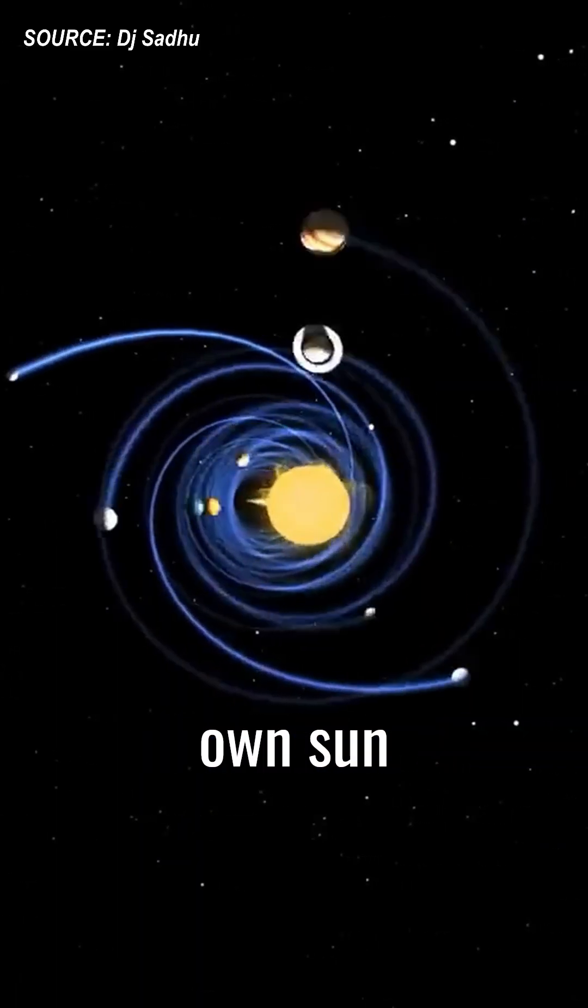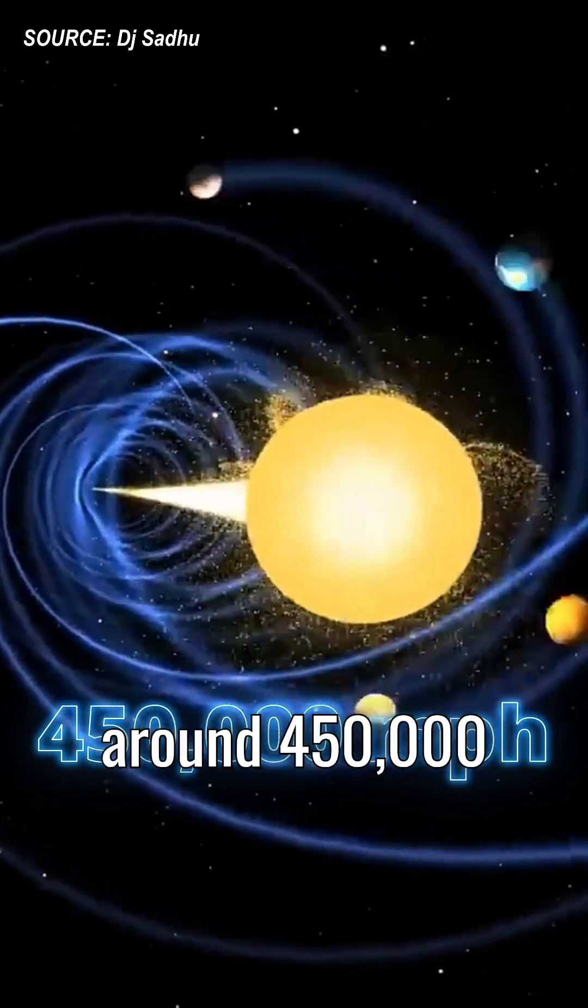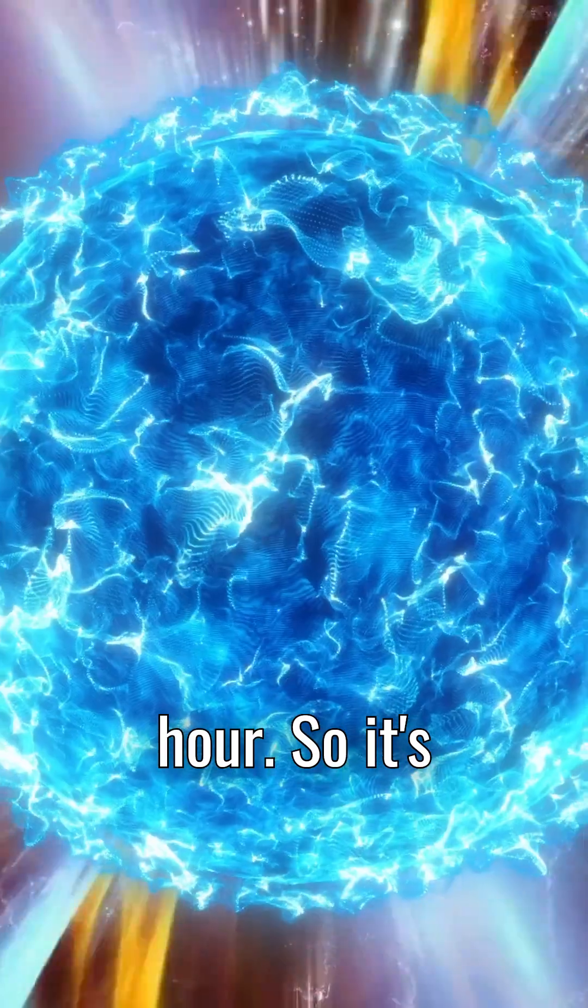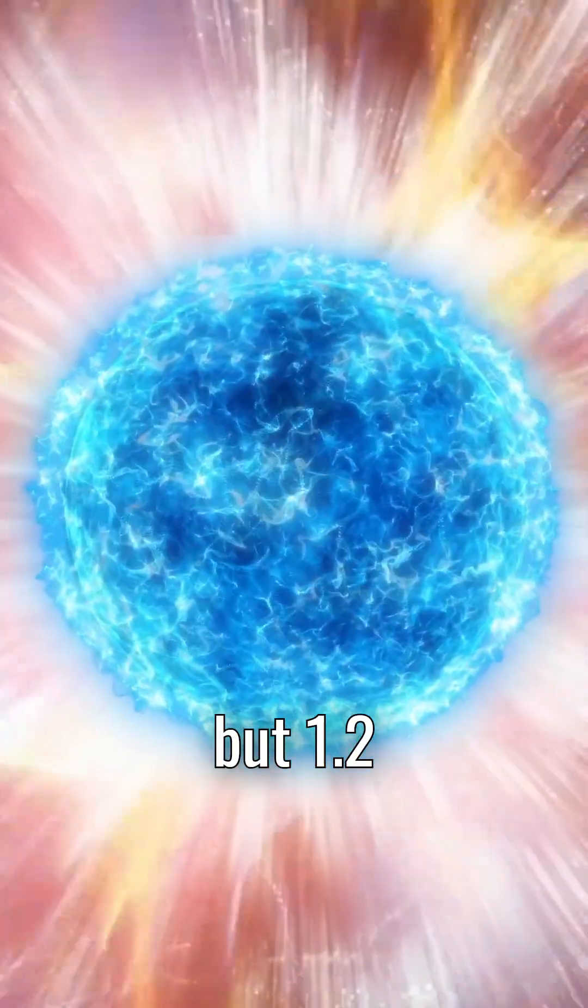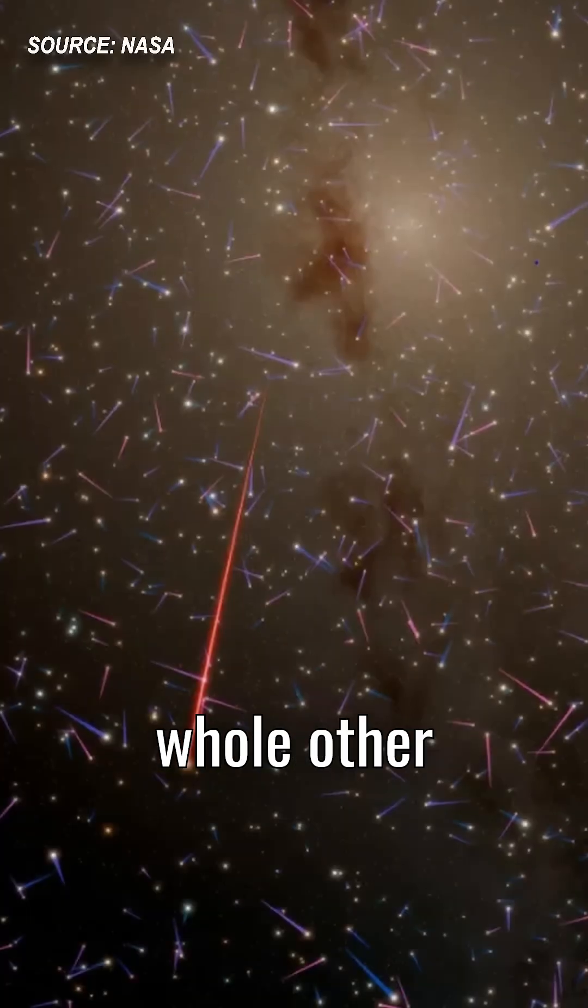For reference, our own sun travels around the Milky Way galaxy at around 450,000 miles per hour. So it's not like we're moving slow, but 1.2 million miles per hour is a whole other level.